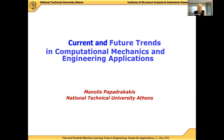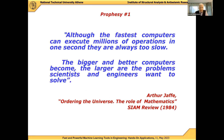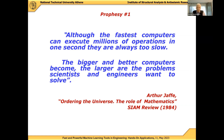I've been asked to present very briefly current and future trends in computational mechanics and engineering applications, and I will start with a prophecy — a prophecy said and written 40 years ago by Arthur Jaffer in a paper 'Ordering the Universe: The Role of Mathematics,' published in the SIAM Review journal: 'Although the fastest computers can execute millions of operations in one second, they are always too slow, because the bigger and better computers become, the larger are the problems scientists and engineers want to solve.'